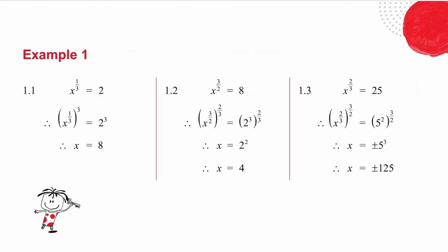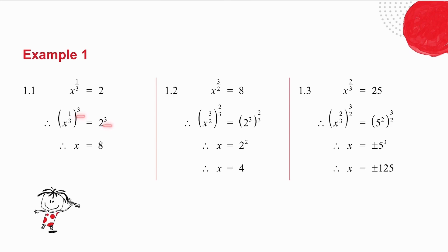In the first example, I've got x to the 1 third equals 2. I want to solve for x, so I need x to the power 1. I raise both sides to the power 3, because a third times 3 is 1, and x to the 1 is just x. What I do on one side I must do on the other, so x is equal to 8.